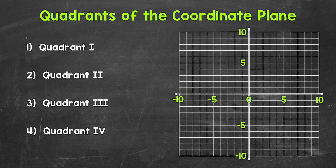Now remember, just as a quick review here, and before we get into the four quadrants: the x-axis is the horizontal axis, so it goes side to side — this is the x-axis right here. Then the y-axis is the vertical axis, so it goes up and down — this is the y-axis right here.